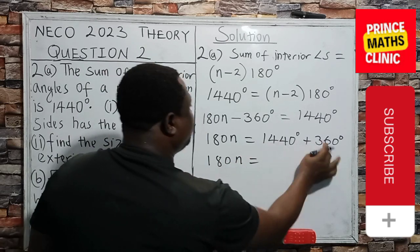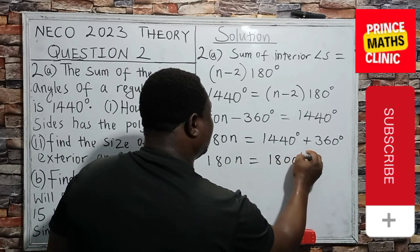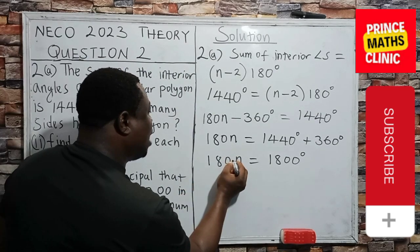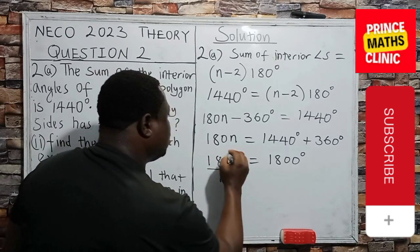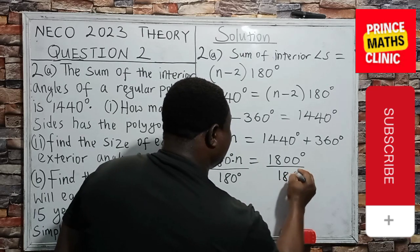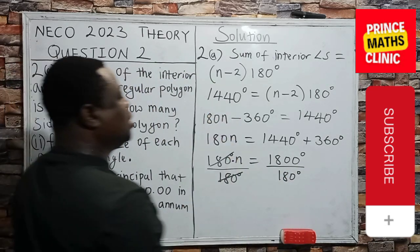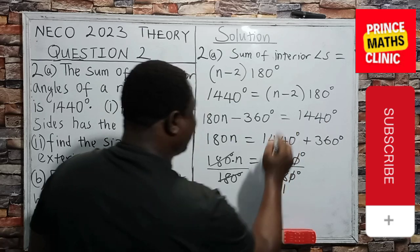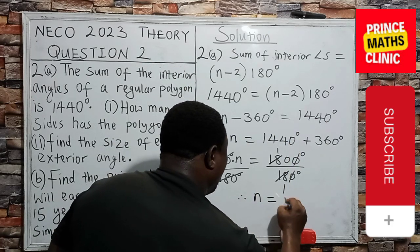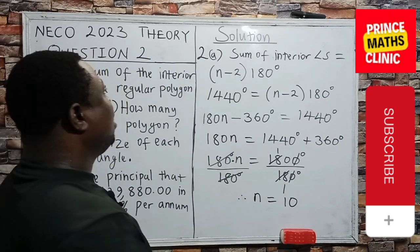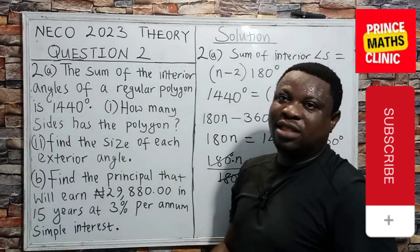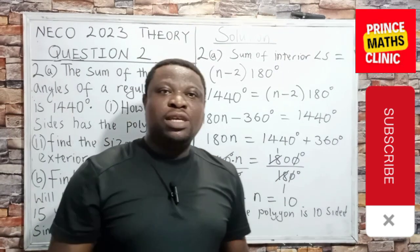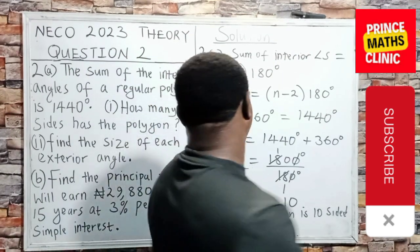When you add this up, you are going to get 1,800 degrees. At this point, N is multiplying 180. If I divide both sides by 180 degrees, 180 degrees cancels 180 degrees. Then 0 here cancels out 0 here. 18 here, 1, 18 here, 1. It means that this interior angle has 10 sides. And when a polygon is 10 sided, it has a name, and that name is called Decagon.